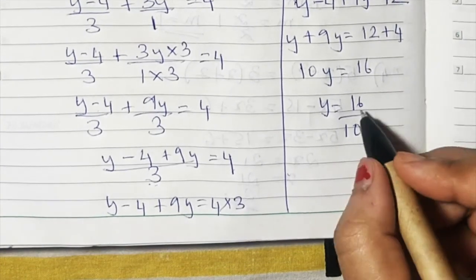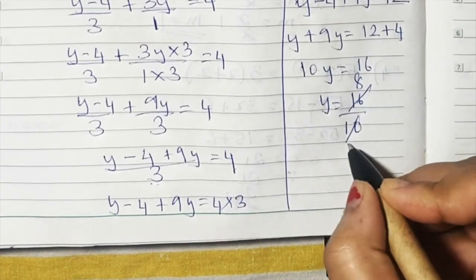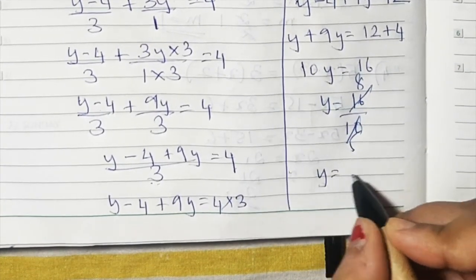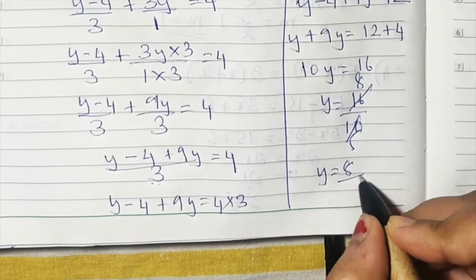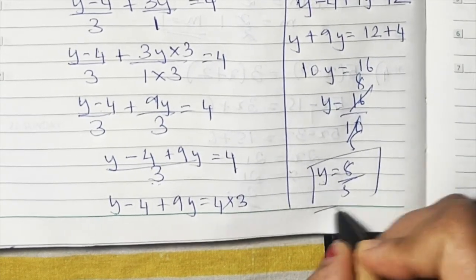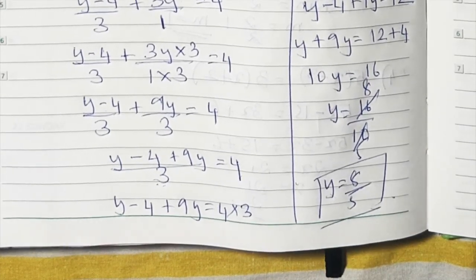16 upon 10 simplifies — 2 eights are 16 and 2 fives are 10 — so the value of y is 8 upon 5. That's it.